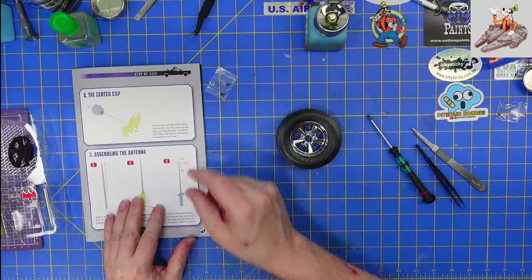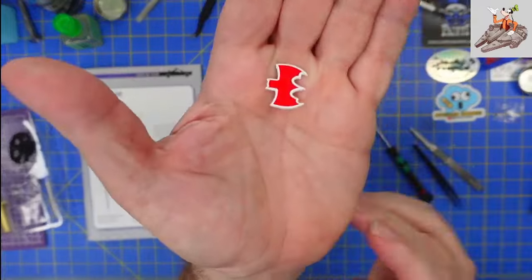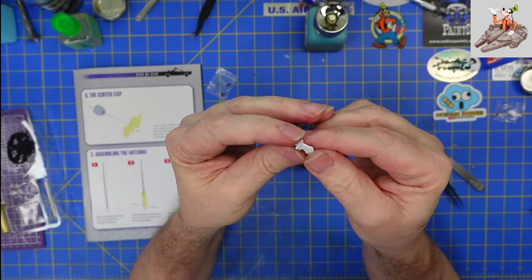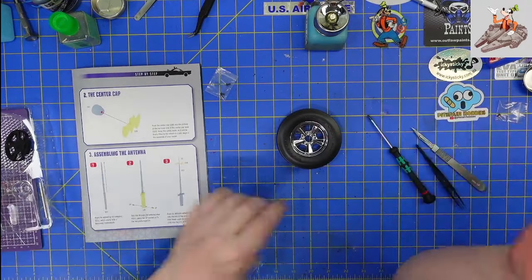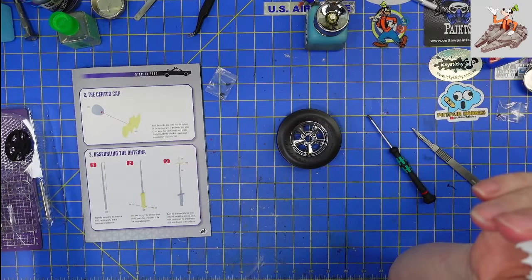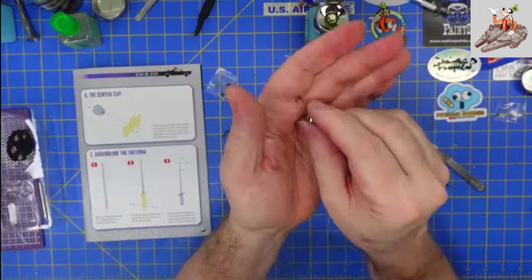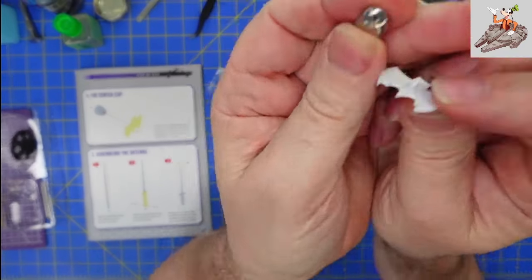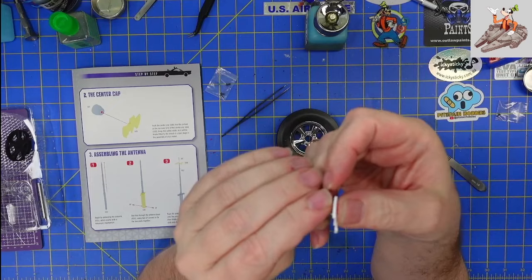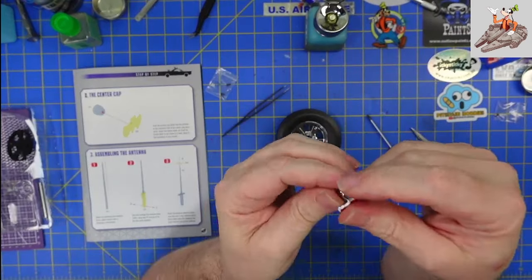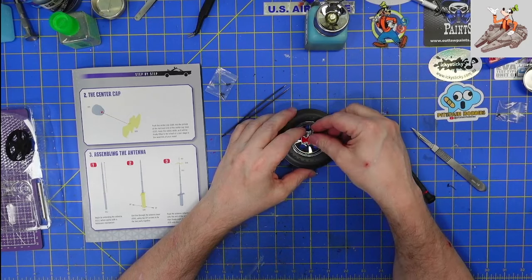So we turn this over and the next thing it has you do is take this bat symbol, which is plastic. I'm going to take the bat symbol along with this chrome piece here. There's a hole there. And on the symbol, push it together. And then it eventually will sit in here.